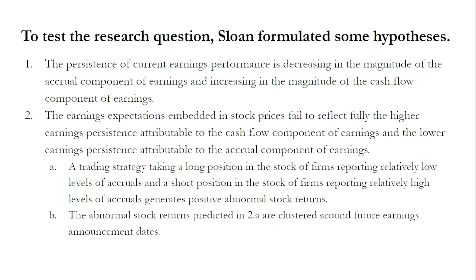Here are the two hypotheses that Sloan formulated. The first is that the persistence of current earnings performance is decreasing in the magnitude of the accrual component of earnings and increasing in the magnitude of the cash flow component. The second is that earnings expectations embedded in stock prices fail to fully reflect the higher earnings persistence attributable to the cash flow component and the lower persistence attributable to the accrual component. This second hypothesis also implies that a trading strategy taking a long position in firms reporting relatively low accruals and a short position in firms reporting relatively high accruals generates positive abnormal stock returns.